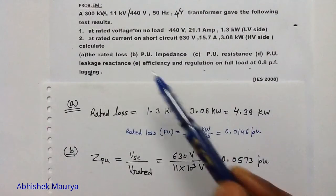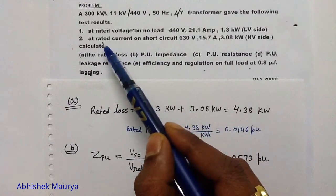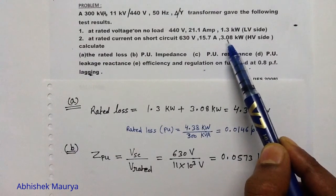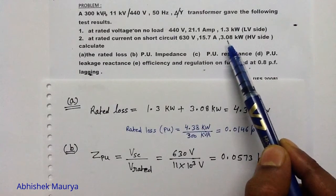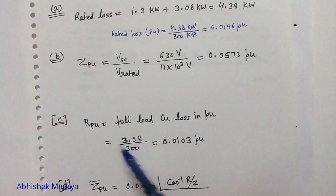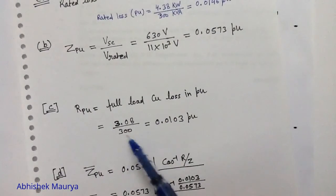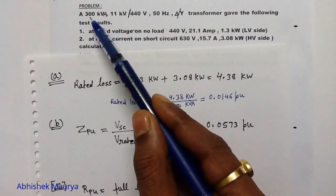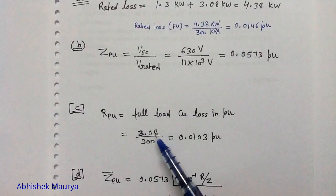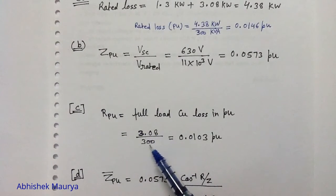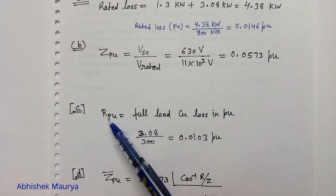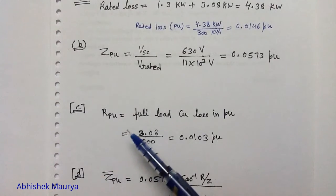In the second test result, because the rated current is flowing on short circuit, the loss of 3.08kW is the rated copper loss. So we can convert this rated copper loss to per unit: the actual value of the rated copper loss is 3.08kW divided by the base power of 300kVA. Therefore, the full load copper loss in per unit is the per unit resistance of the transformer, and the third part is solved.